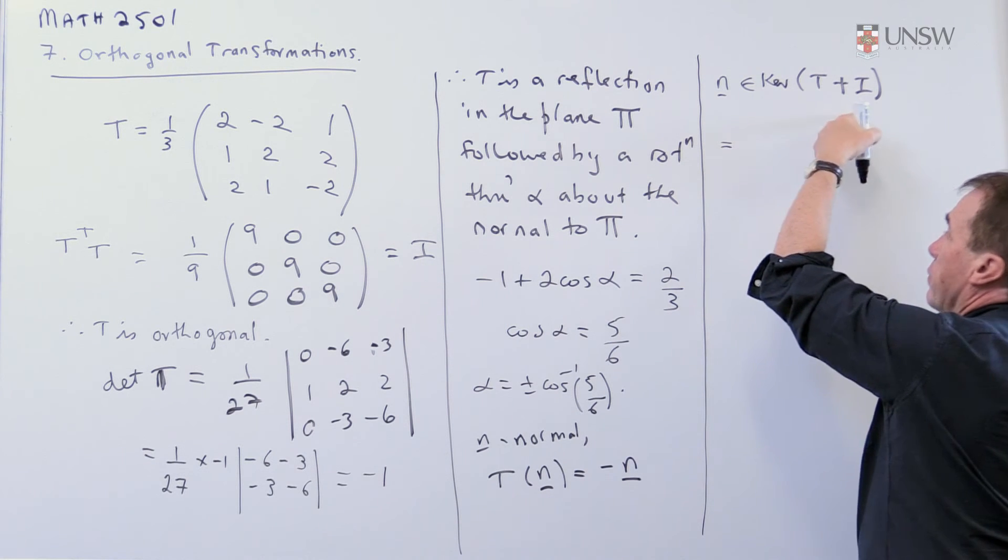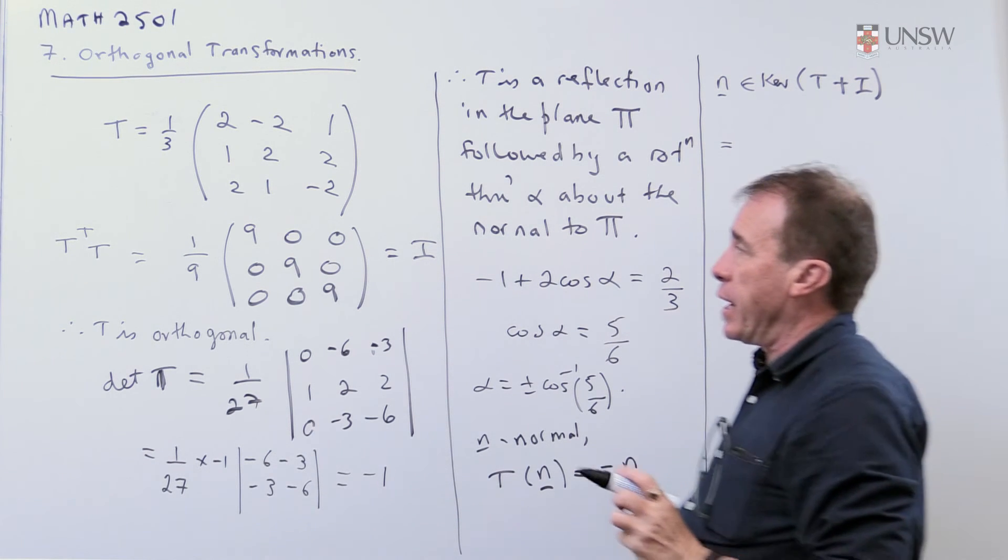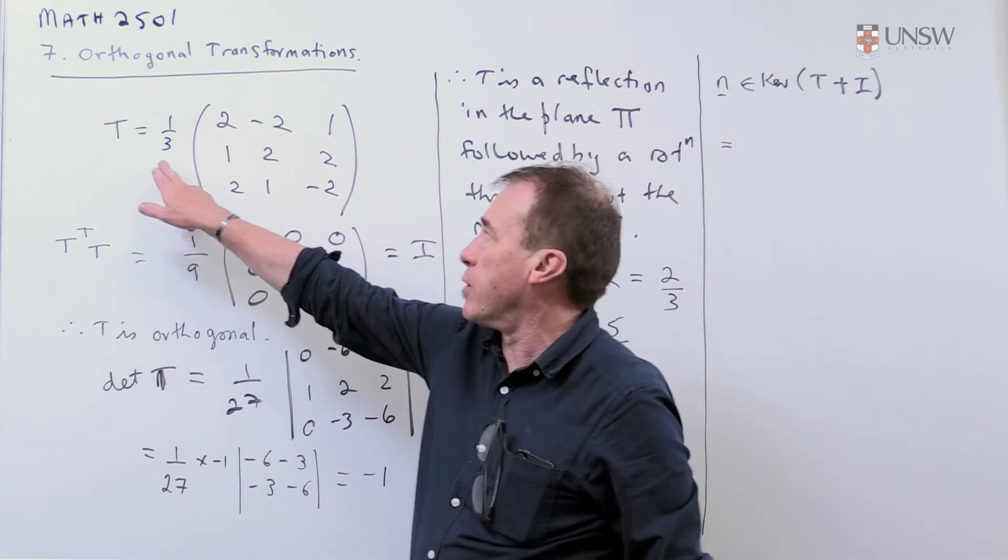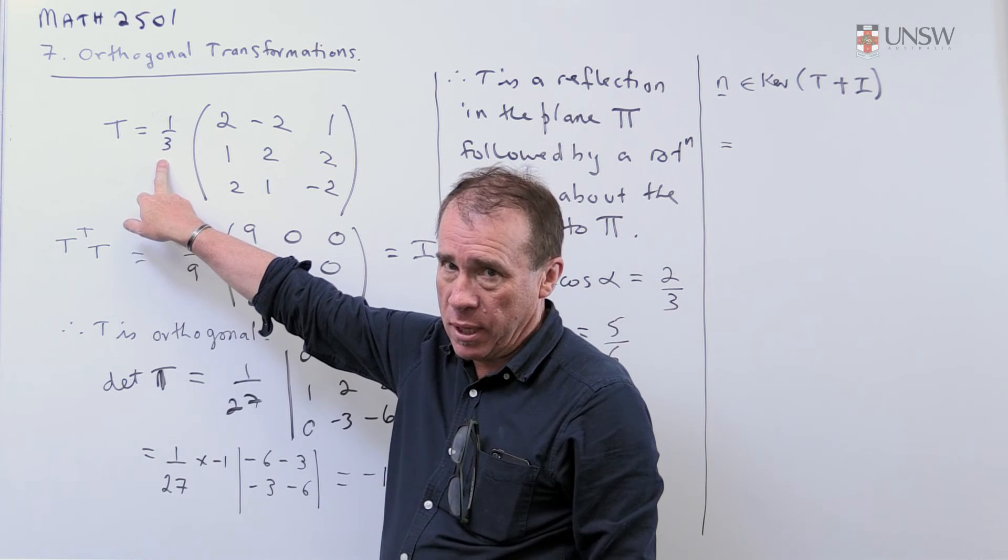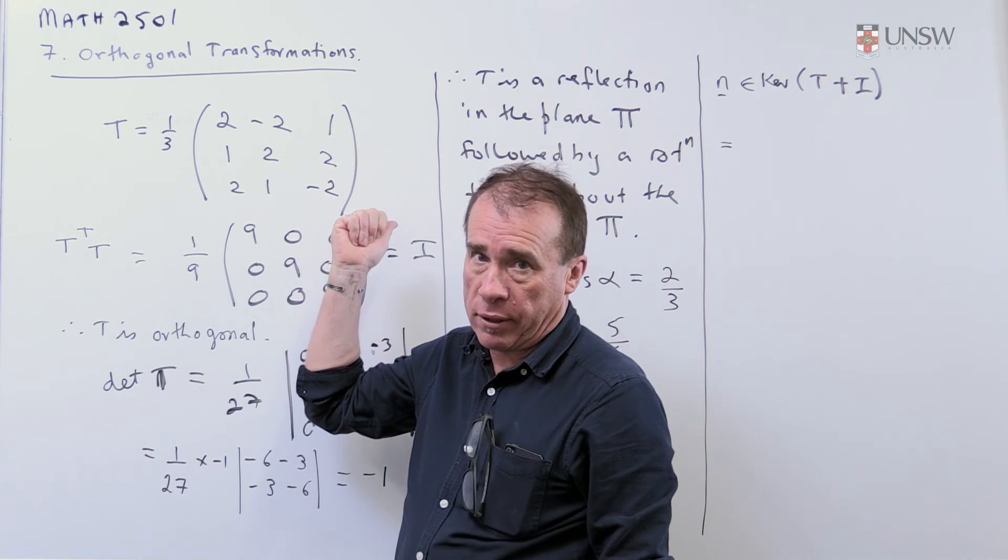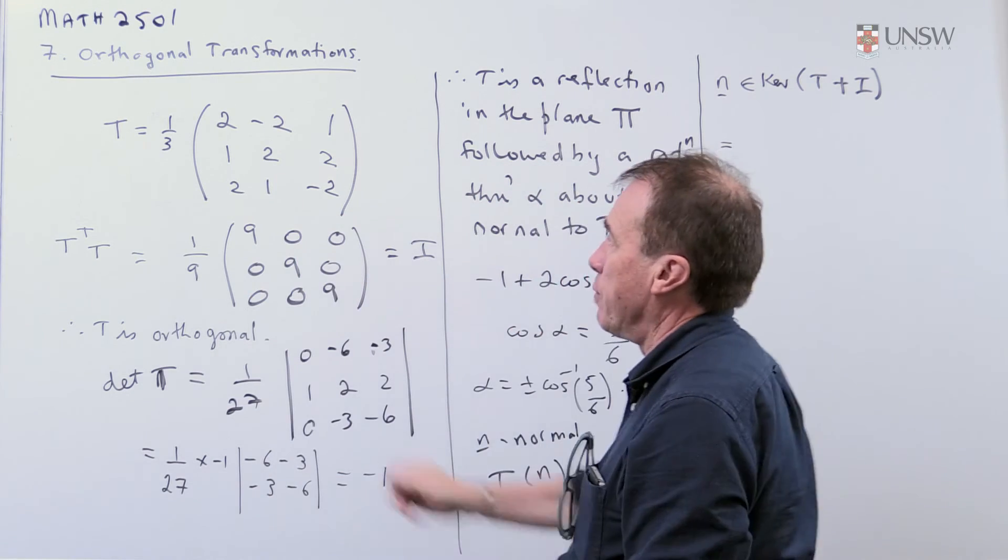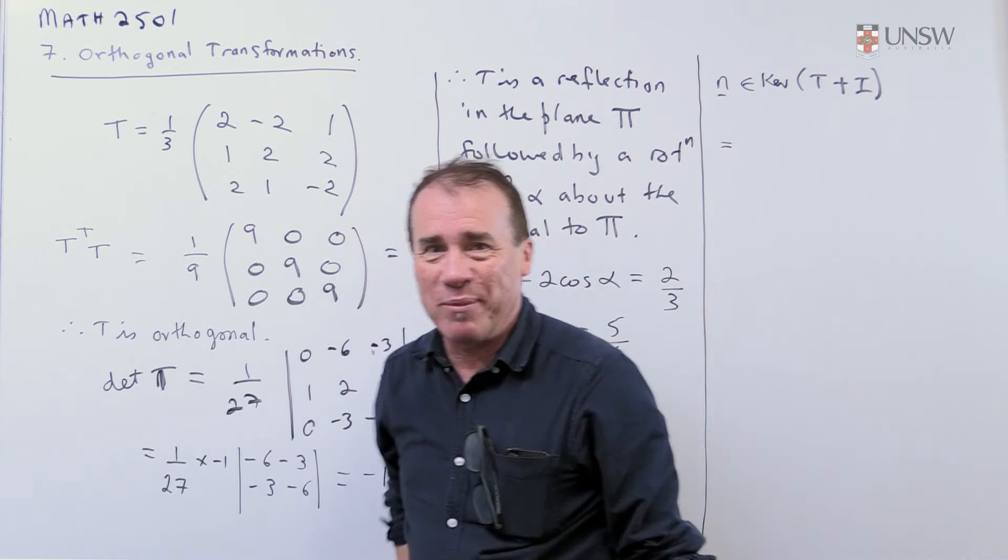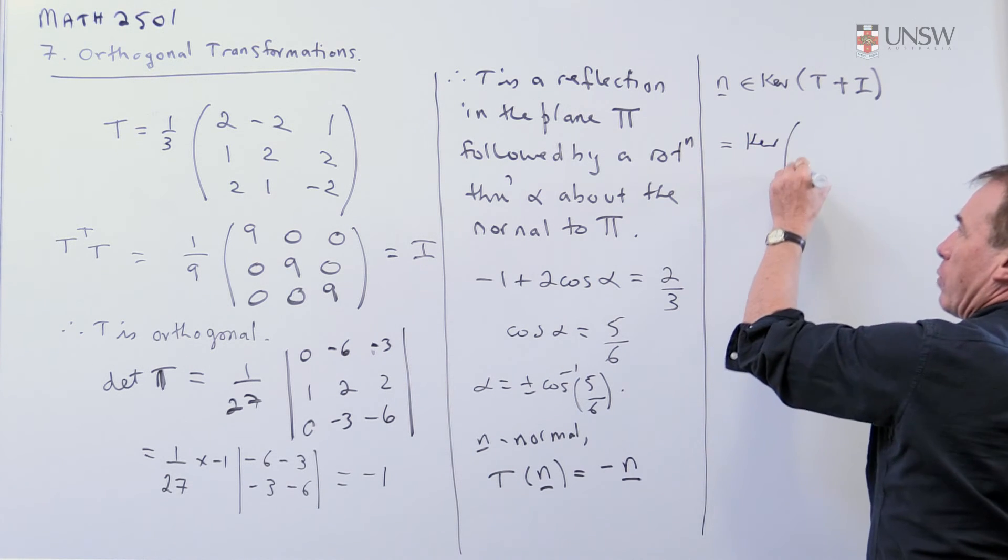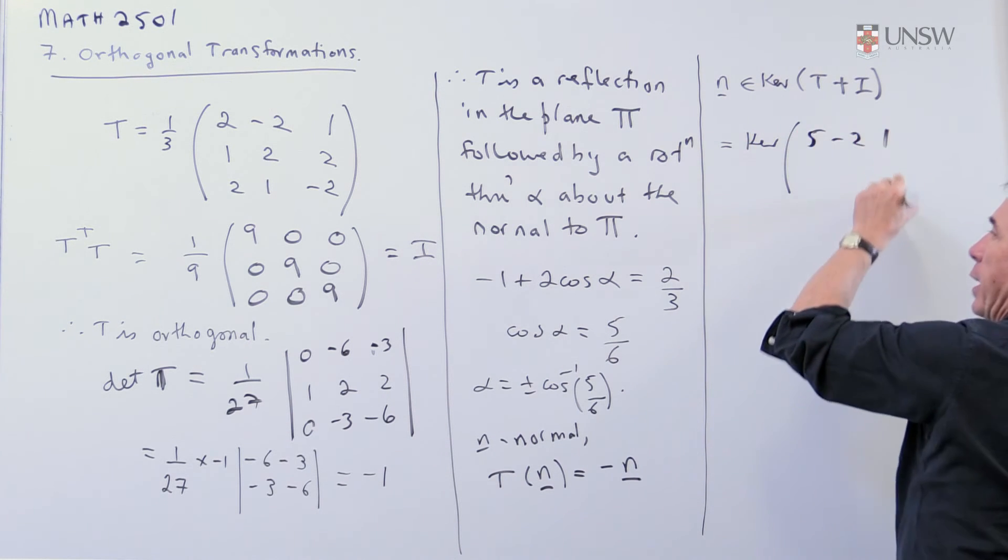So in other words, the kernel of this matrix. Now again, be very careful. I'm going to add one onto the main diagonal. But remember that I've got a third out the front. So you're really going to be adding on three onto the main diagonal. And then I can forget about, once I've done that, I can forget about the third from the kernel.